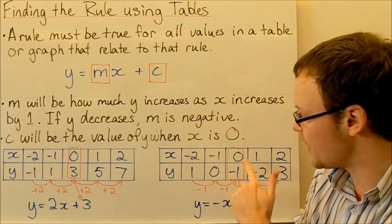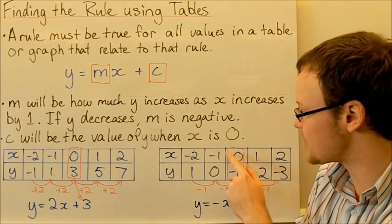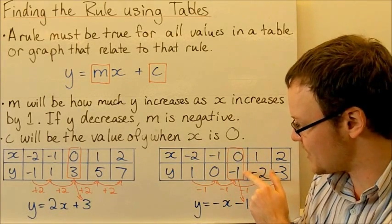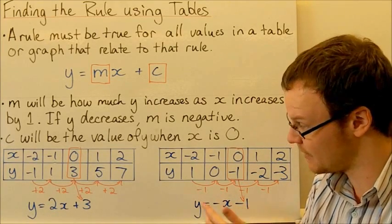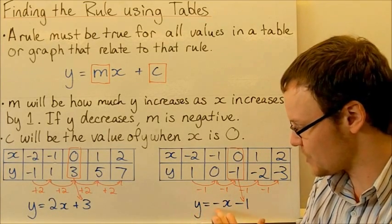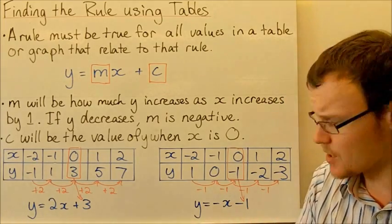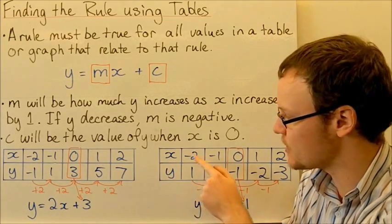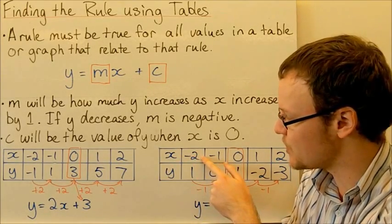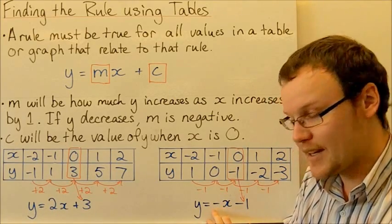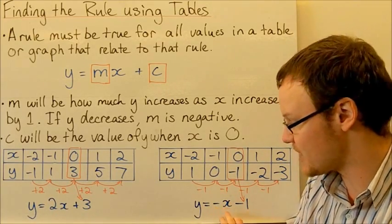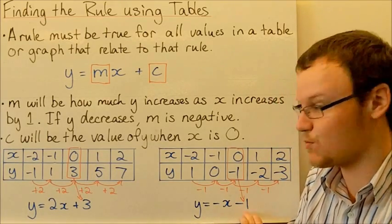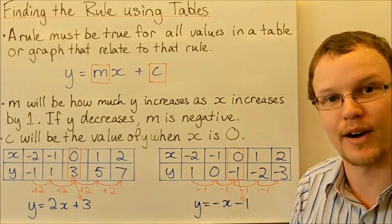We can then look for our value for c, which is when x is equal to 0. When x is equal to 0, y is equal to negative 1, so c is minus 1. Our rule is y equals negative x minus 1. Substituting x equals negative 2: negative 1 times negative 2 is positive 2, and 2 minus 1 is 1 — and sure enough that's our y value.